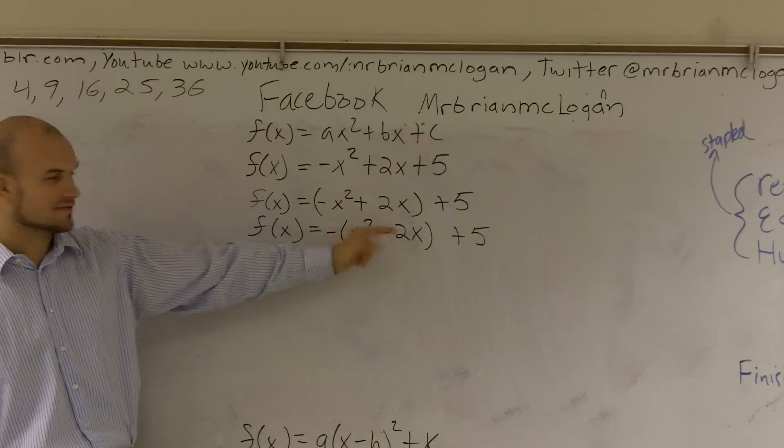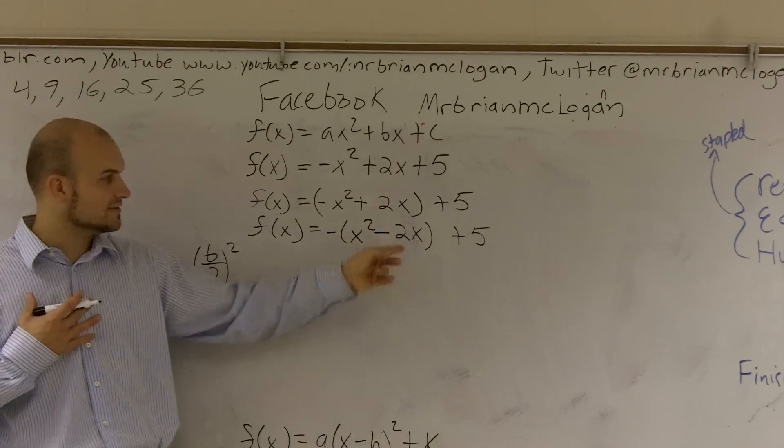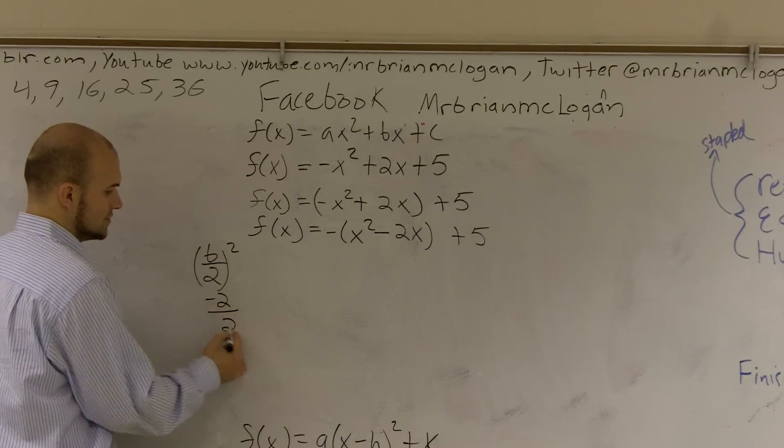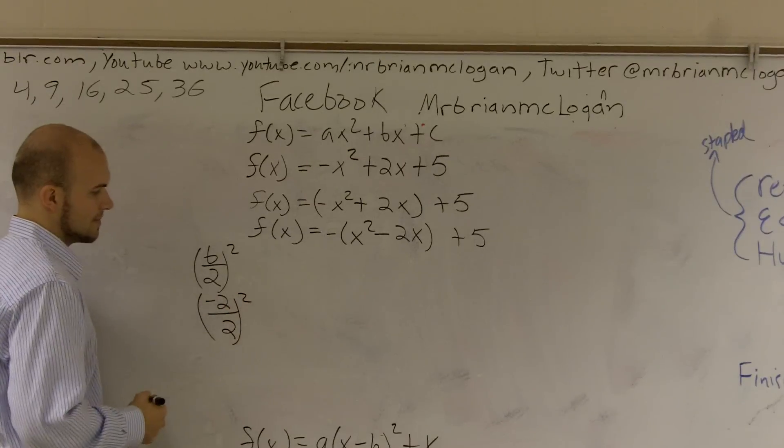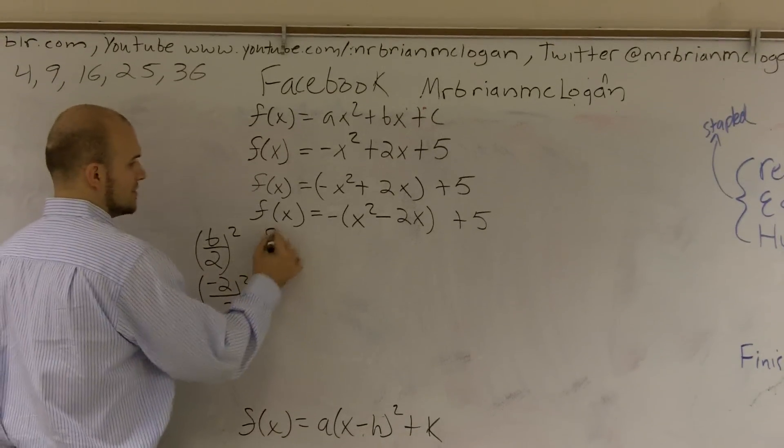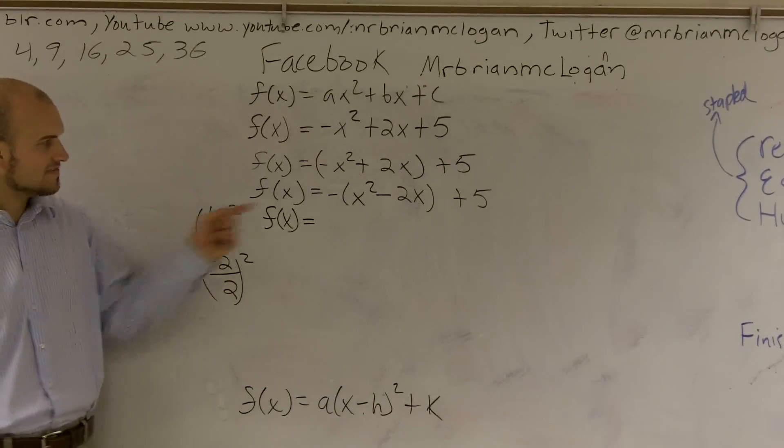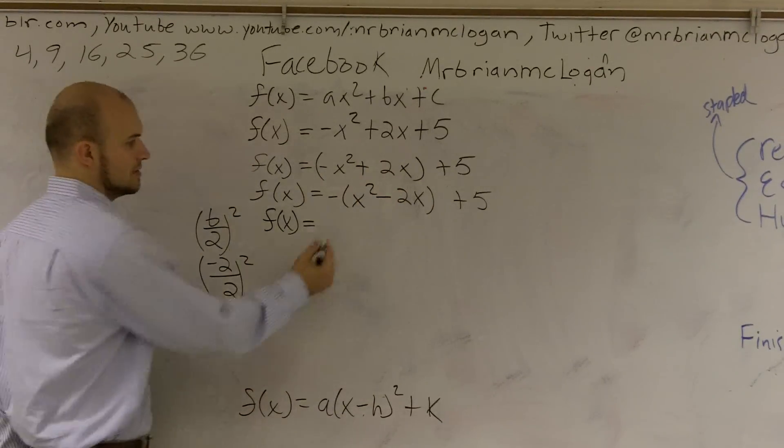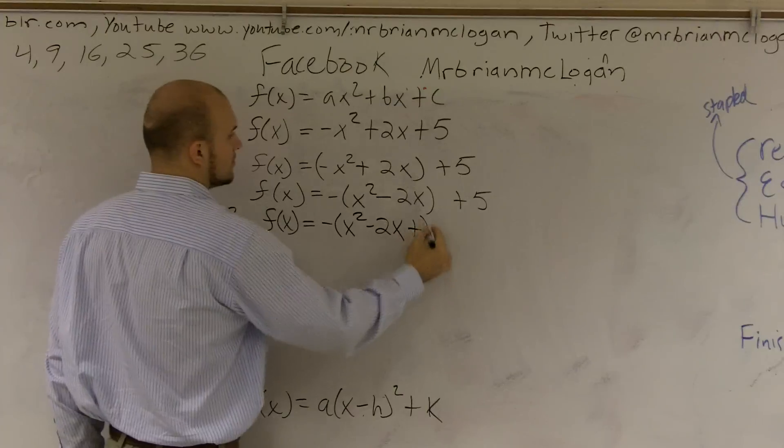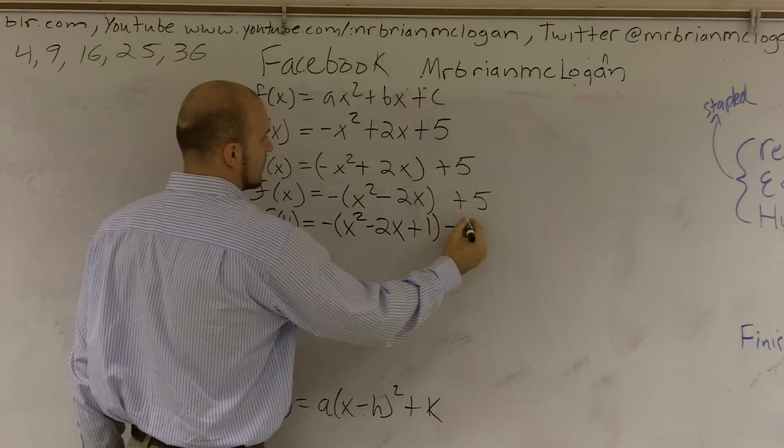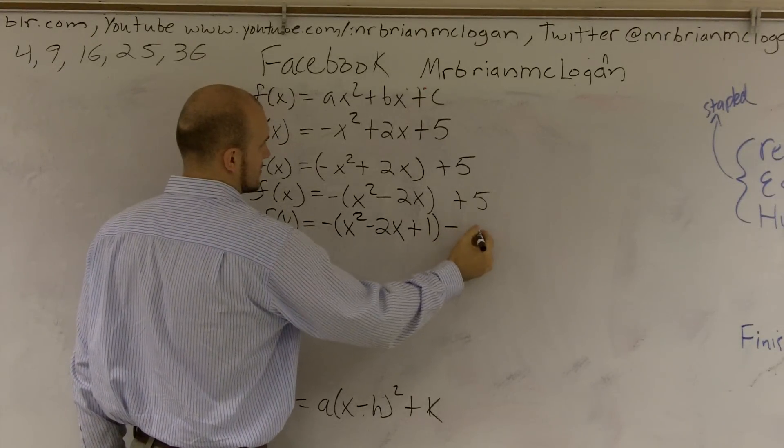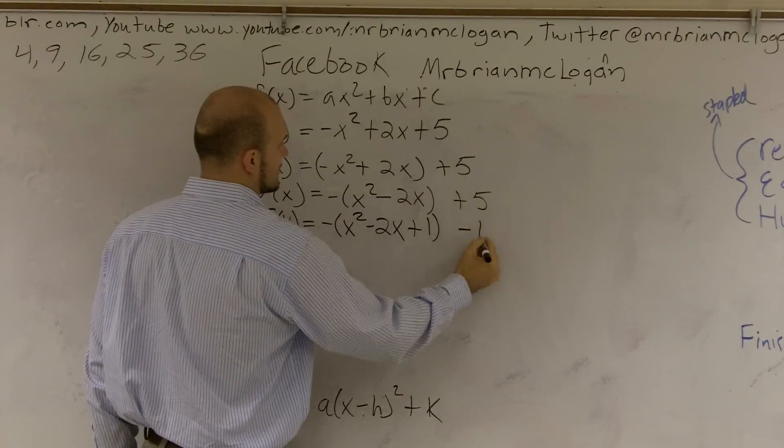So I take b over 2. So actually, my b is a negative. But it really, in this case, it wouldn't have changed anything, because you're going to square it. So then your negative will cancel out. So I take a negative 2 over 2 and square it. And negative 2 divided by 2 is negative 1. Negative 1 squared is positive 1. Right. So I rewrite it. f of x equals, and what you're going to do is you're going to add this value inside your trinomial and outside your trinomial. So if we get a negative x squared minus 2x plus 1 minus 1, I'll spend a little bit of minus 1 plus 5.